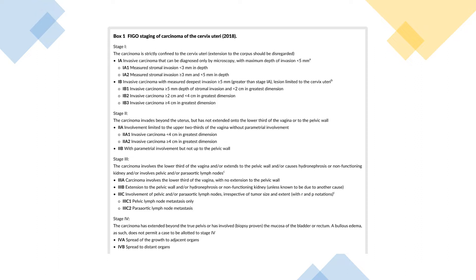Stage 2 is cancer that invades beyond the uterus but has not extended onto the lower third of the vagina or to the pelvic wall. 2A is involvement limited to the upper two thirds of the vagina without parametrial involvement. 2A1 is invasive carcinoma less than 4 cm in greatest dimension. 2A2 is invasive carcinoma greater than or equal to 4 cm in greatest dimension. 2B is with parametrial involvement but not up to the pelvic wall.